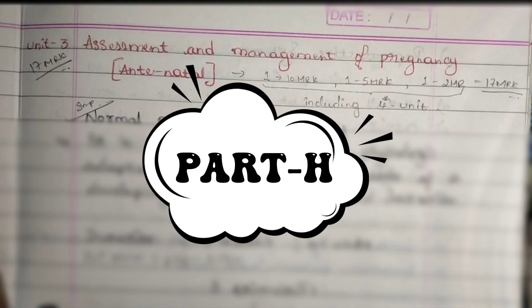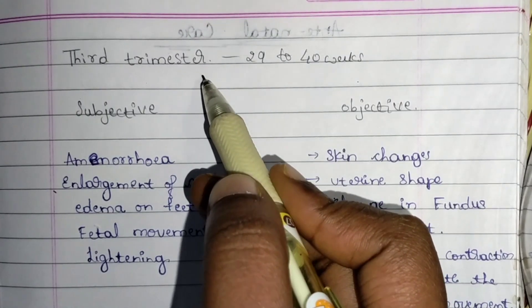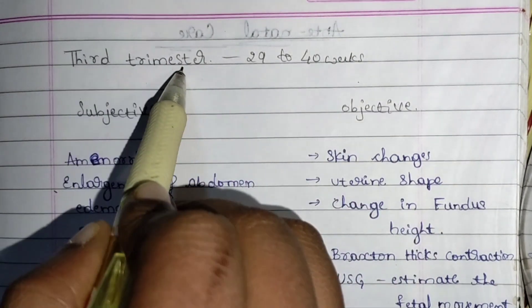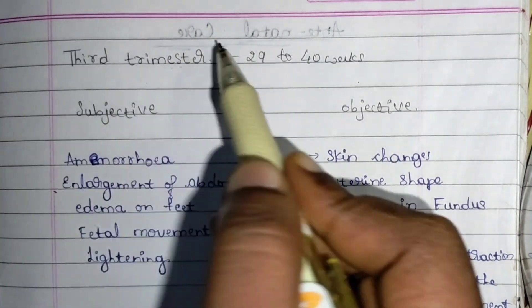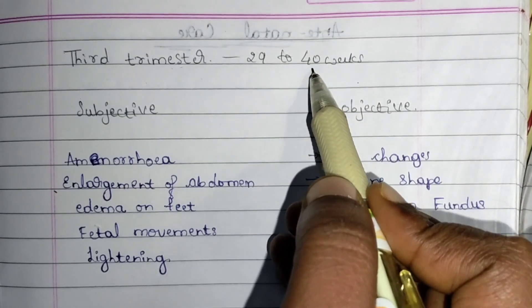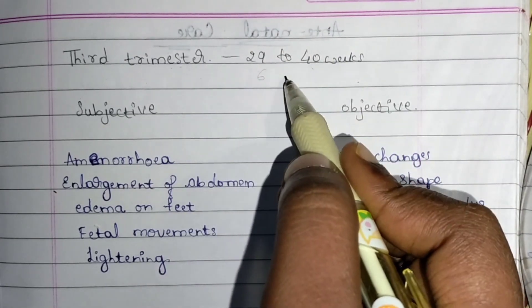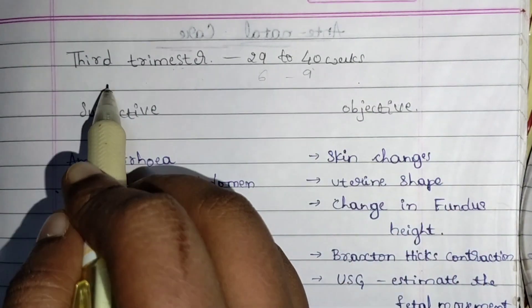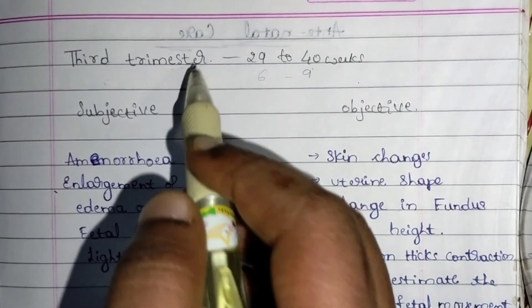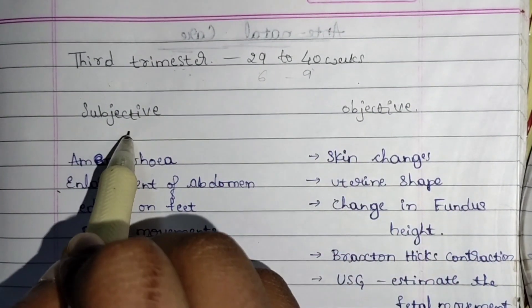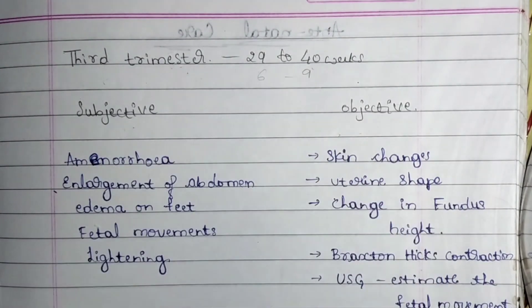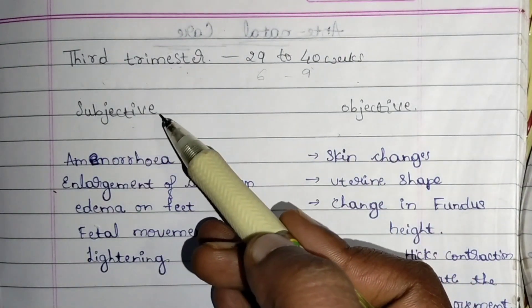This is unit 3, part H — third trimester in the diagnosis of pregnancy. The third trimester is from the 29th week to the 40th week, that is from the 6th month to the 9th month. It considers both subjective data and objective data — subjective signs/symptoms and objective signs/symptoms.